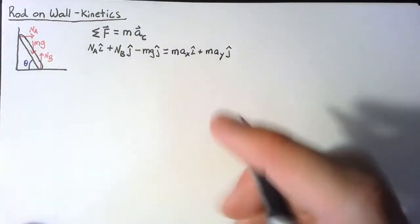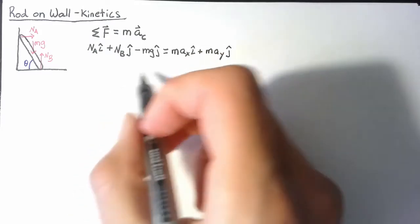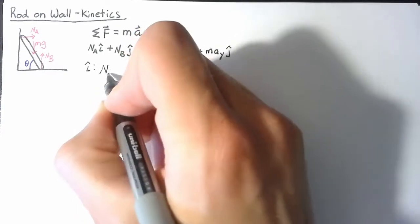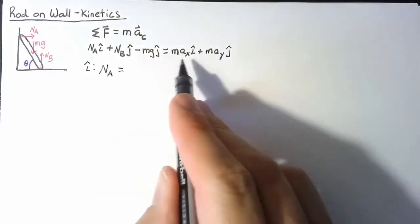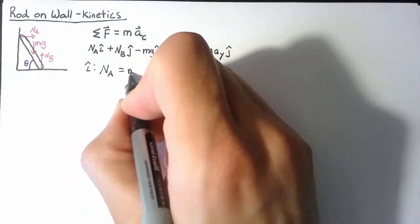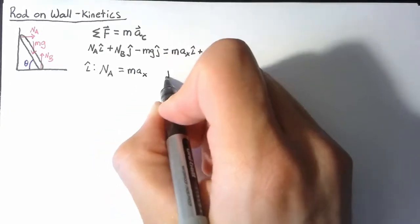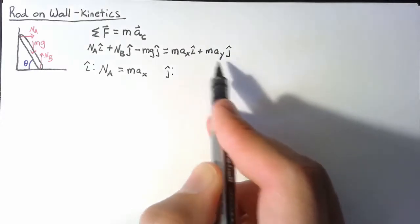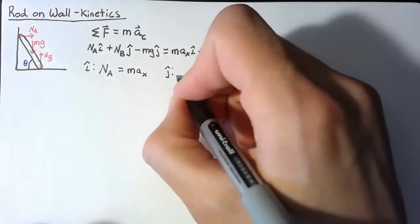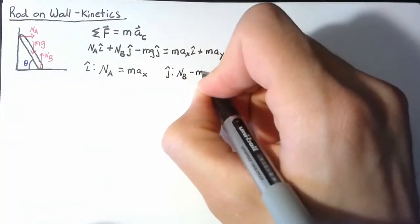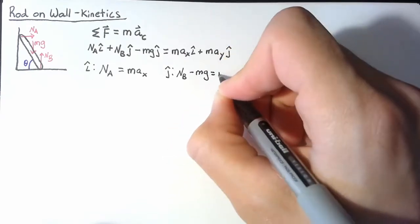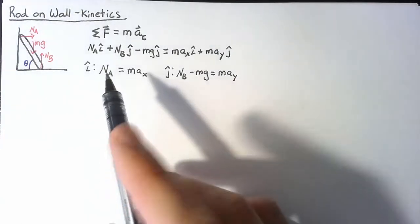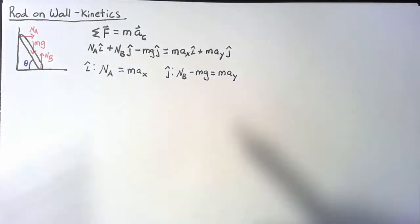Splitting into two equations: in the i direction, the normal force Na is equal to m times Ax. In the j direction, we have two forces on the left-hand side, so Nb minus m times g equals m times Ay. Looking at this so far, we have two equations with four unknowns.